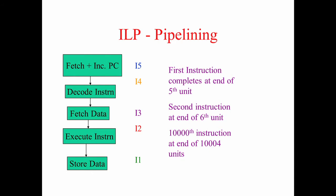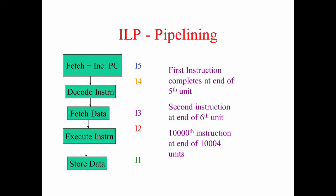By re-utilizing the hardware, we have achieved close to 80% performance improvement. What was taking 50,000 units of time now finishes in 10,004 units. The first instruction still takes 5 units — that is called pipelining latency, or the latency of the pipeline. But subsequent instructions complete one after another, giving us this 80% speed-up just by re-utilizing the hardware.